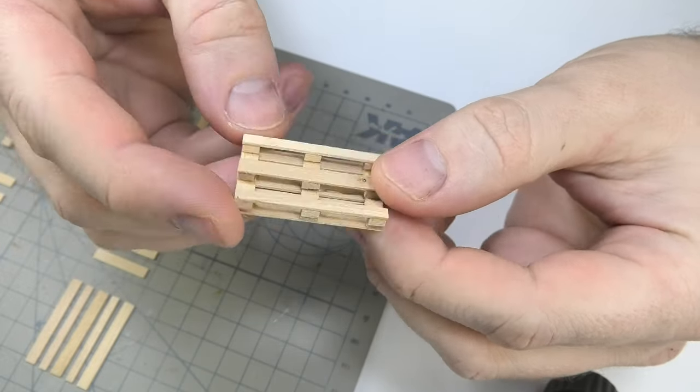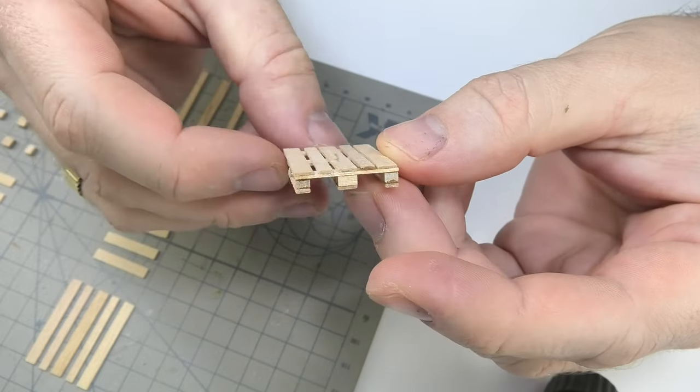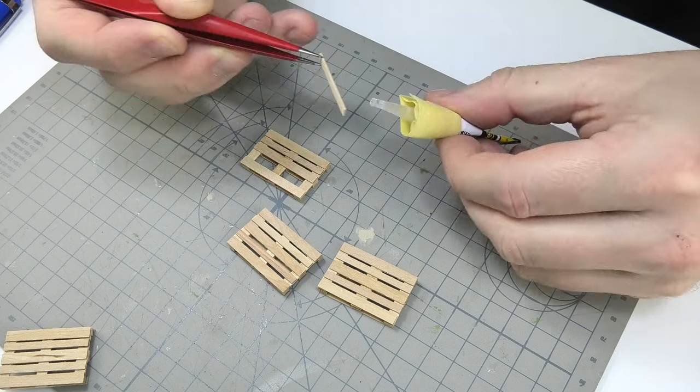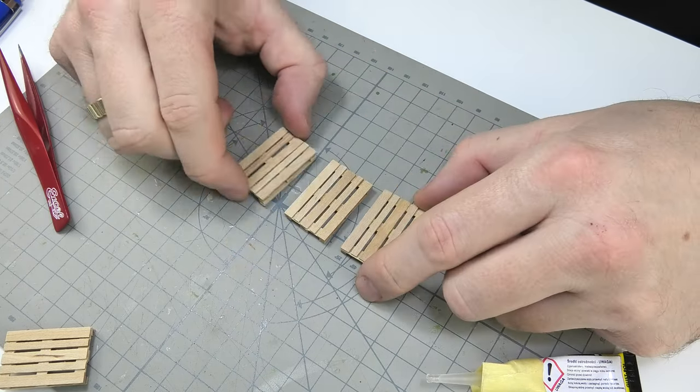As you can see the design is simple which gives us a super realistic looking element to enrich the stand. Building such a set takes about 20 minutes or 5 minutes for one pallet. I haven't made it faster yet.